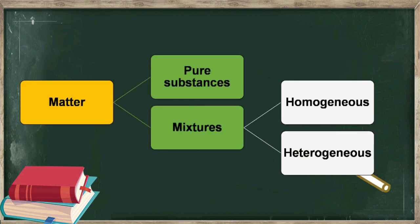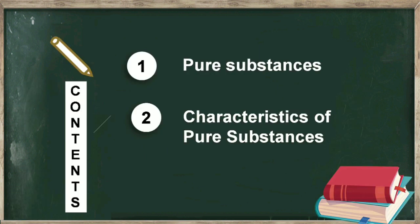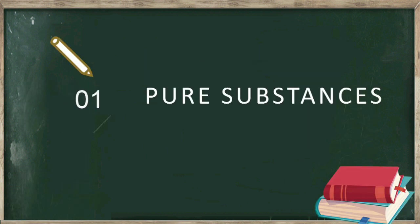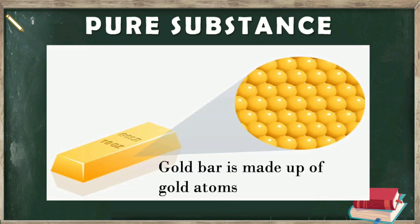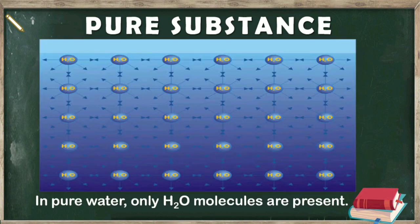In this video we will study about pure substances and their characteristics. Pure substances are those substances which are made up of the same kind of atoms or molecules. For example, this gold bar is made up of atoms of gold only, so it is a pure substance. Pure water is composed of the same kind of molecules, i.e. H₂O molecules, so it is also a pure substance.